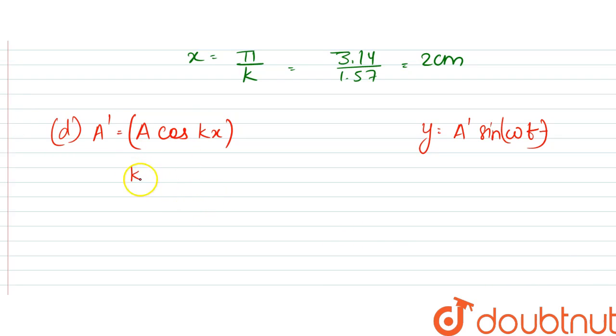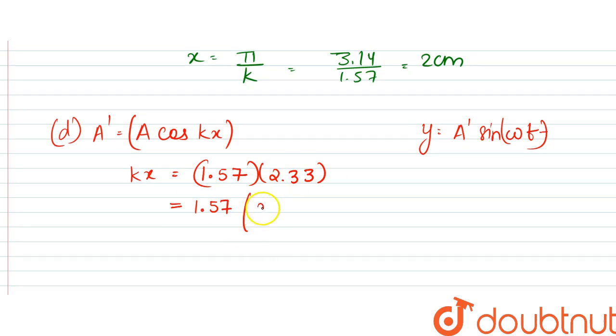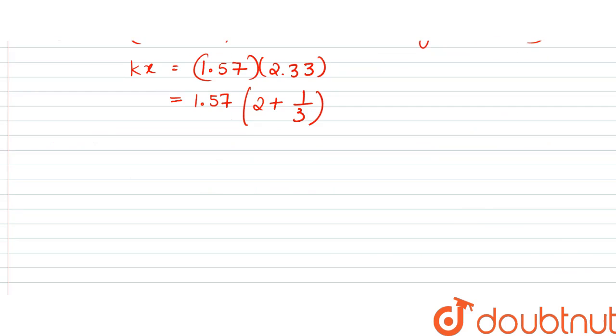So, from here, we can say that kx would be equal to 1.57 into 2.33, which is equal to 1.57. This 2 can be written as 2 plus 1 by 3, in rational form.